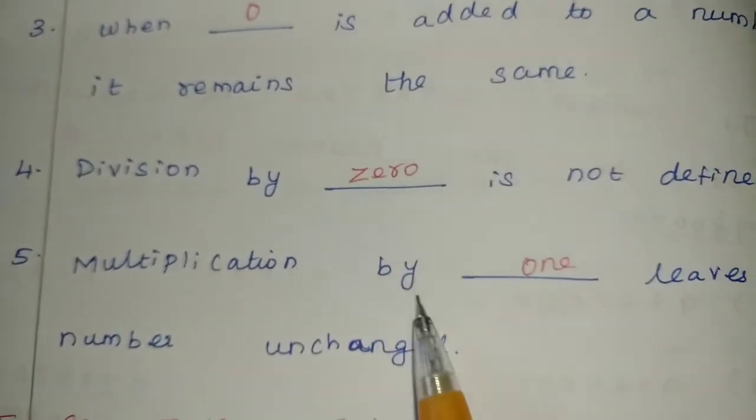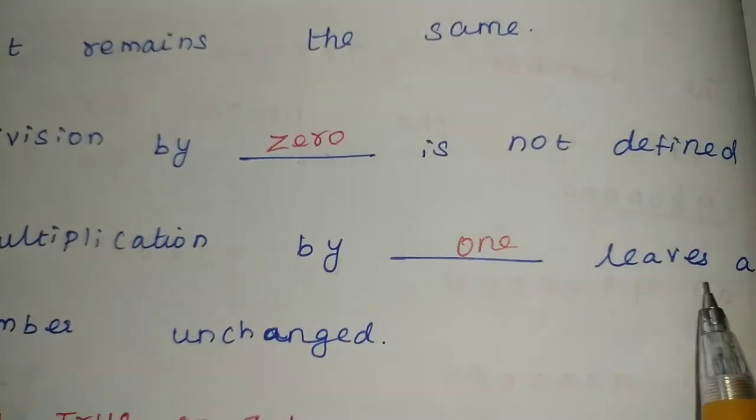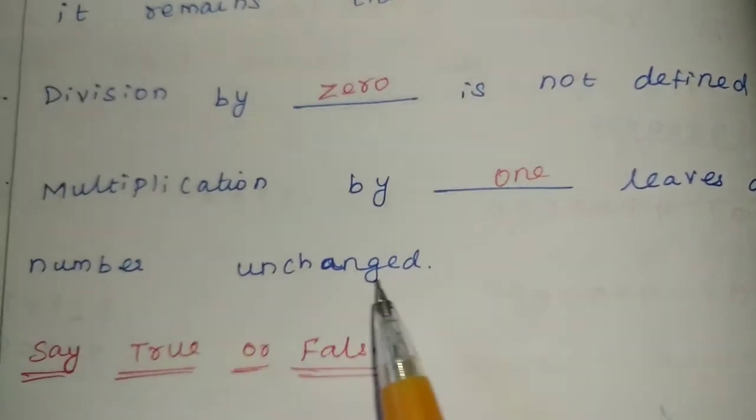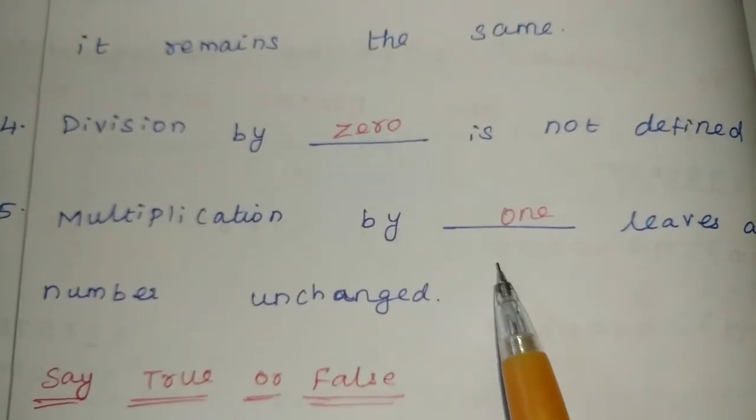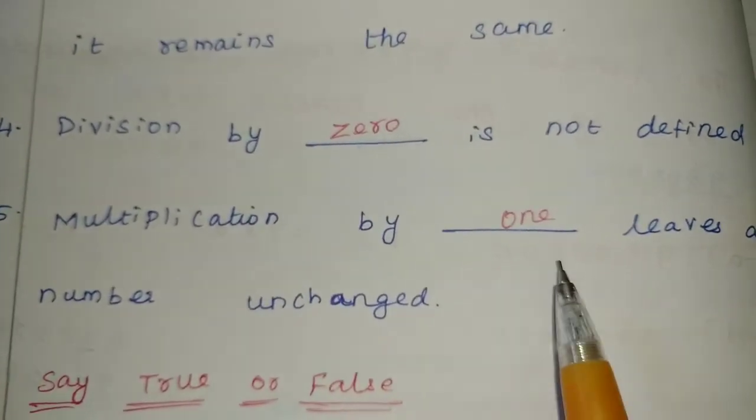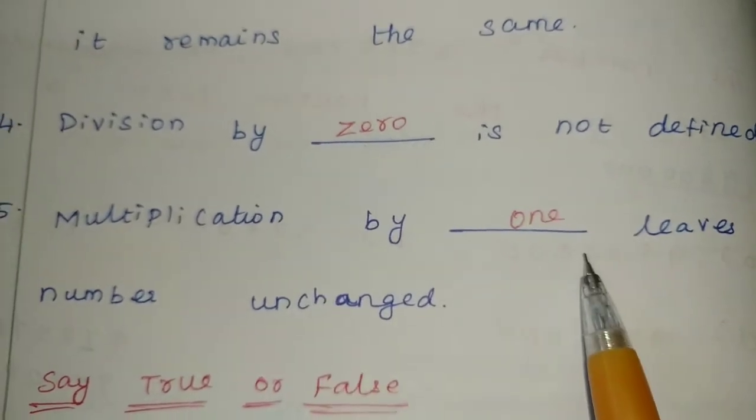Clear? Next, multiplication by blank leaves number unchanged. So, when we multiply any number by which number, that number doesn't change? 1.